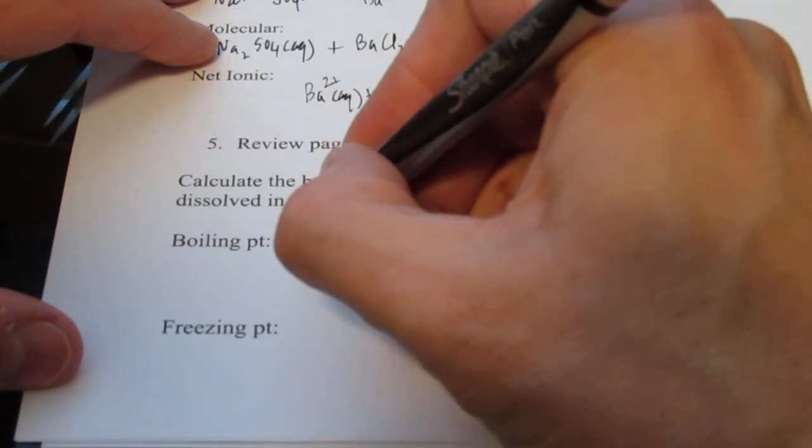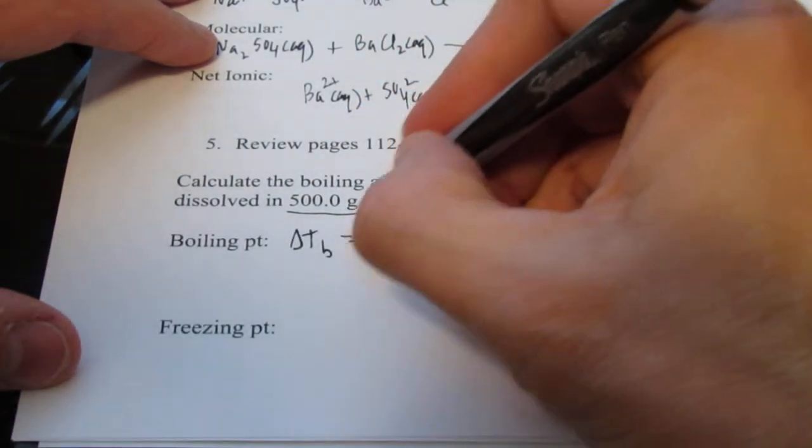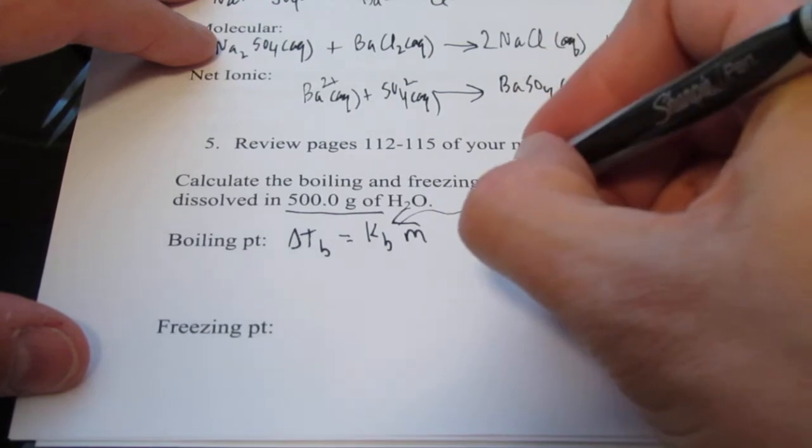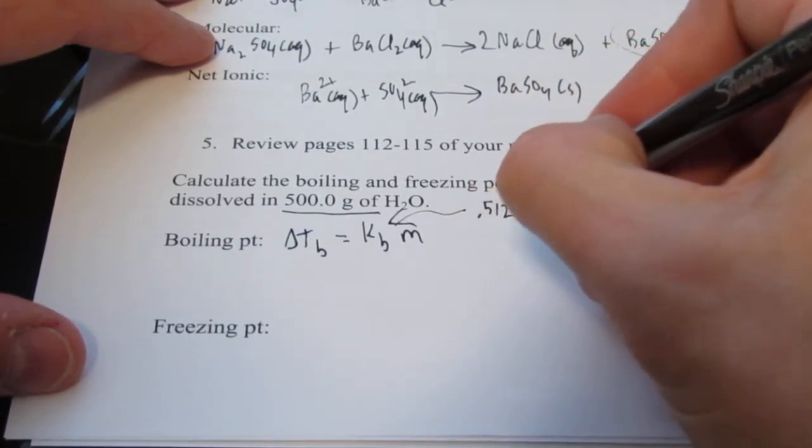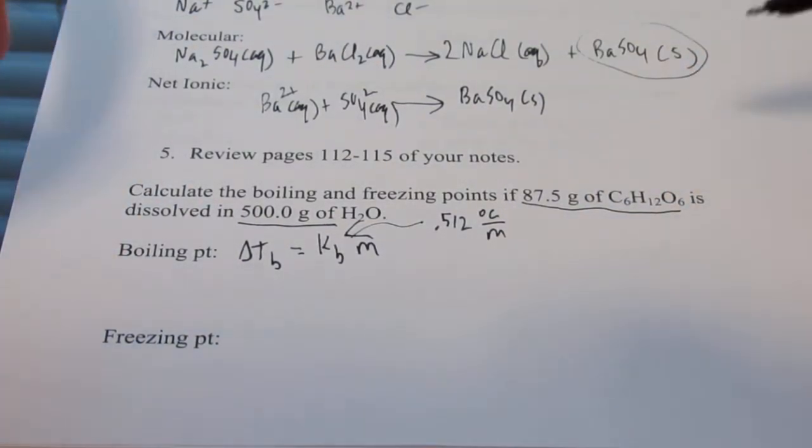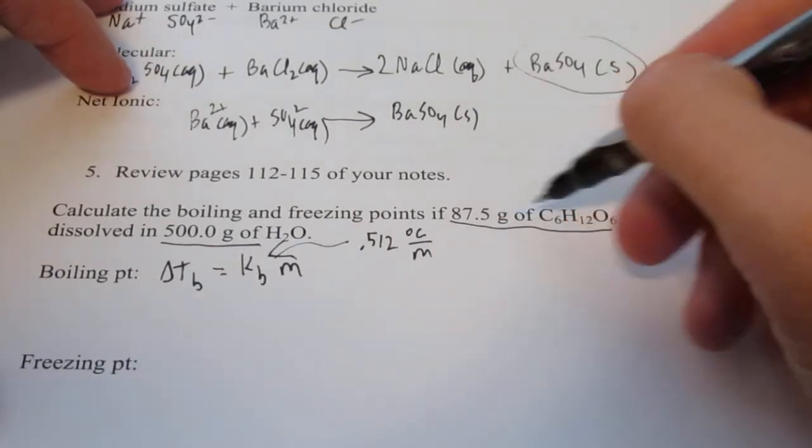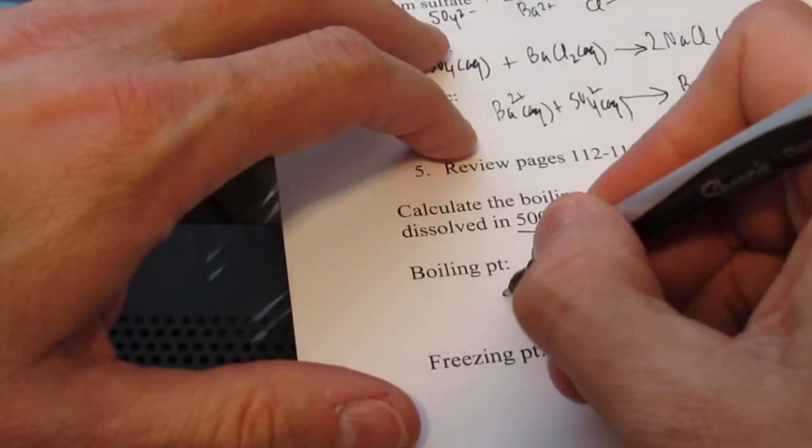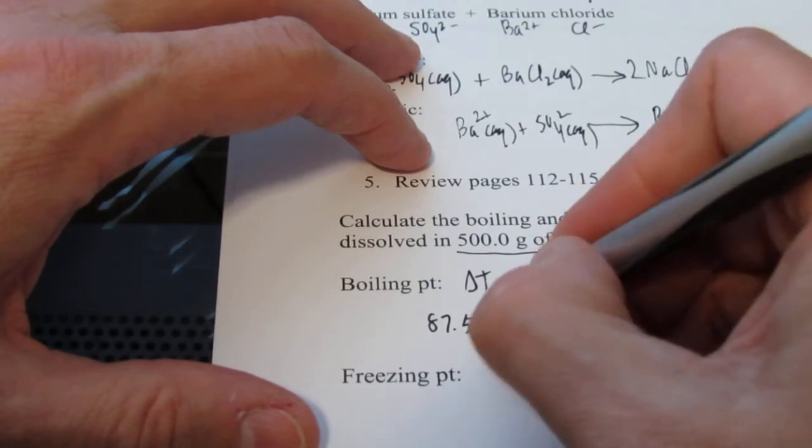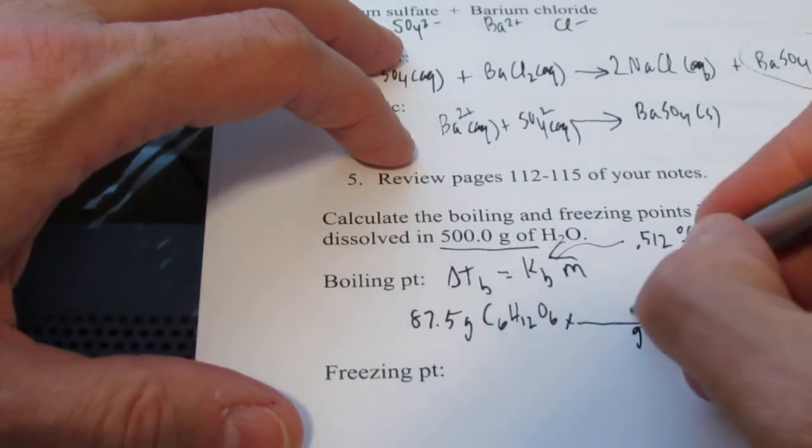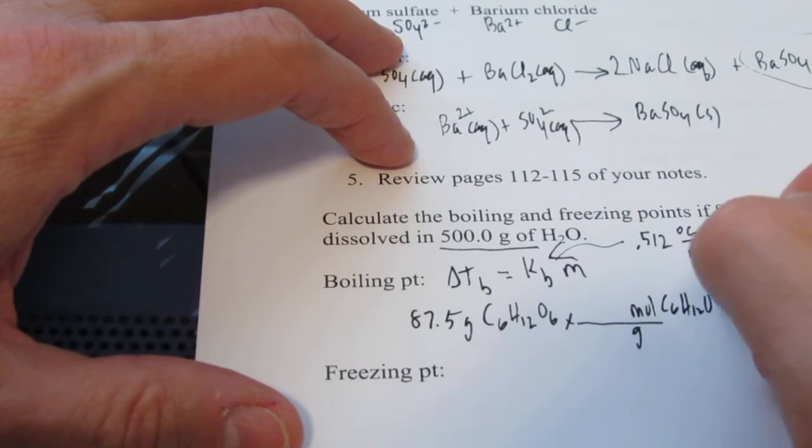I have 87.5 grams of glucose dissolved in 500 grams of water. I want to calculate the boiling and freezing points of my solution. For the boiling point, I'm going to use delta T sub b equals K sub b times the molality. The boiling point constant is 0.512 degrees Celsius per molal, and I would give that to you on the test. I need to find the molality. Let's take my 87.5 grams of C6H12O6 and go from grams to moles.